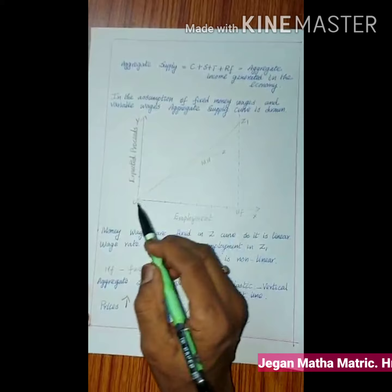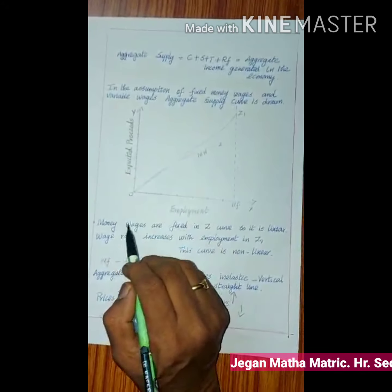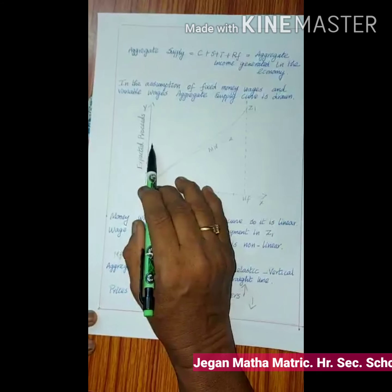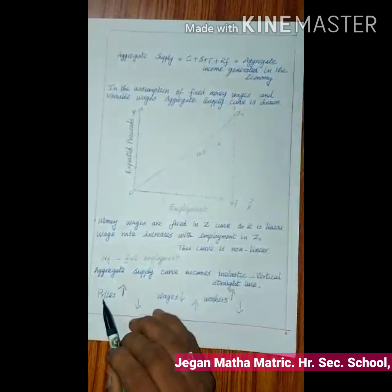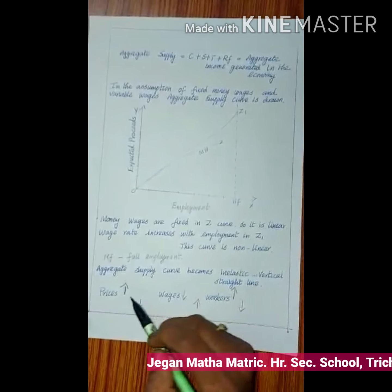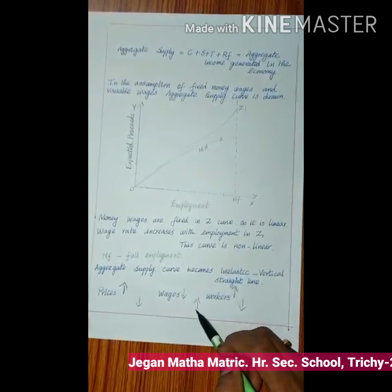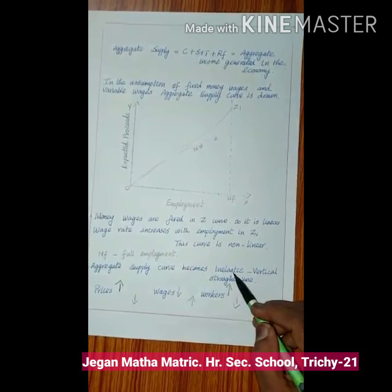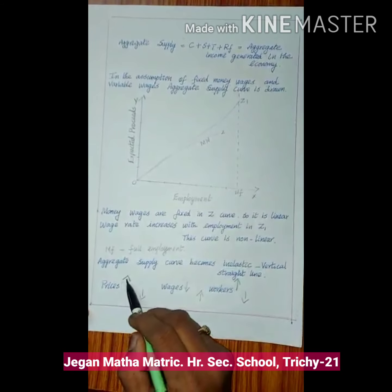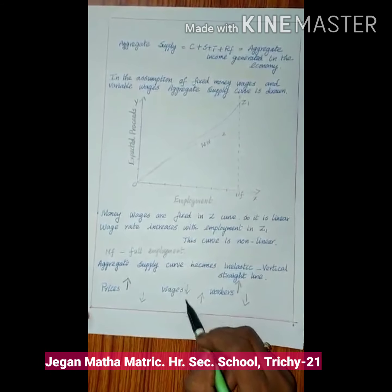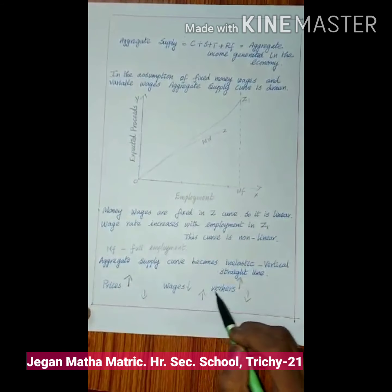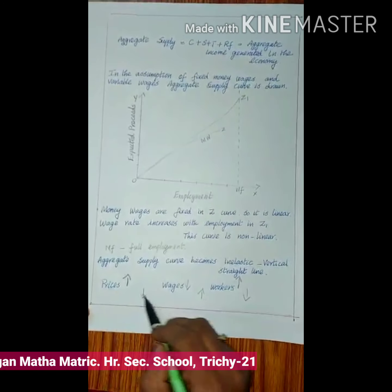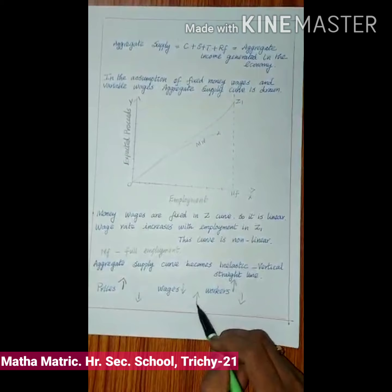Remember, aggregate supply depends on the relationship between price and wages. If prices are high and wages are low, automatically workers will be employed more. So if prices are high and wages low, the producers would like to employ more workers. If prices are low and wages are high, the producers stop or lessen the number of employing workers.